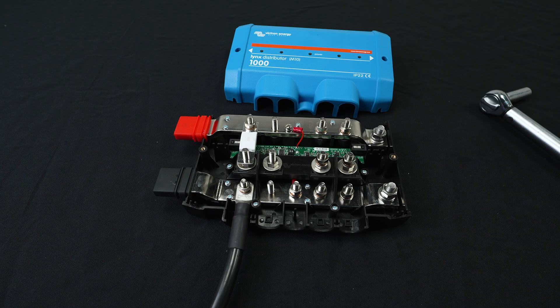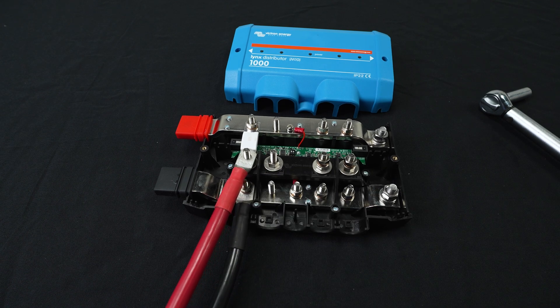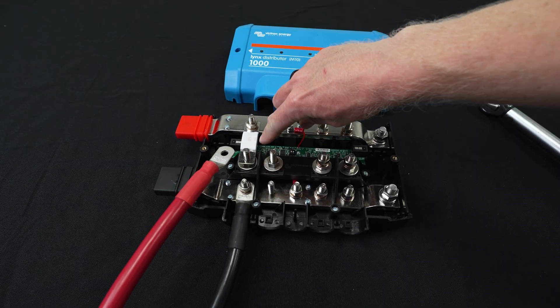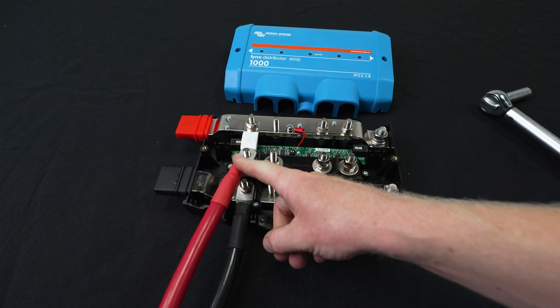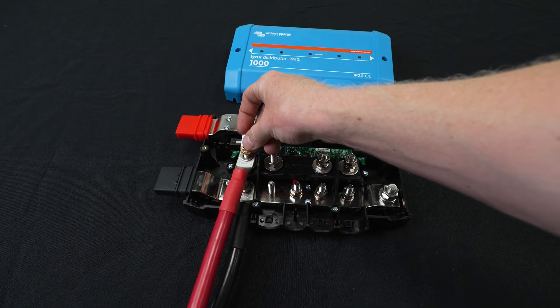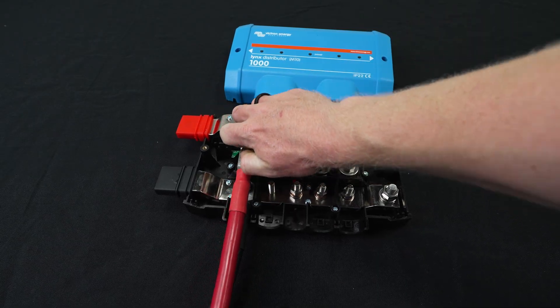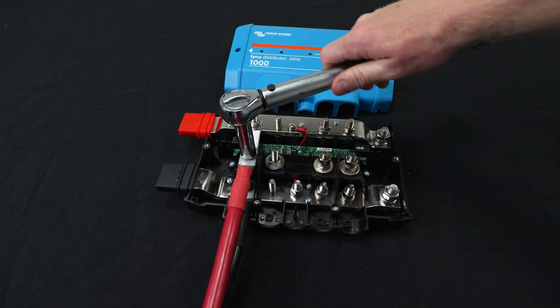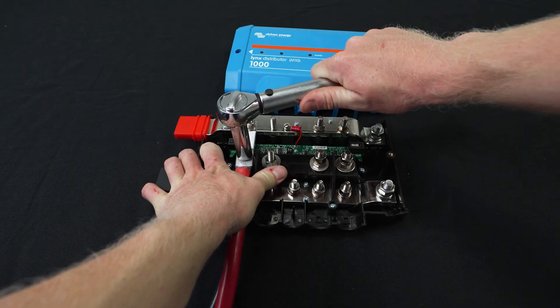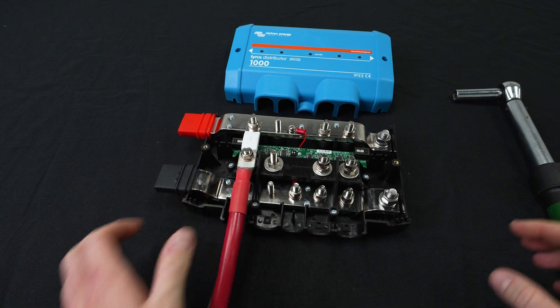Now we're going to go ahead and land our positive cable. Again this is a 2 AWG cable, 5/16 lug. So the fuse is acting as our current carrying conductor here. So again wire right on the fuse, no washers in between the wire and the fuse. On top we have our flat washer, our lock washer, and our nut. You'll notice your cable wanting to rotate, so sometimes it helps to hold your cable in place while you're tightening.